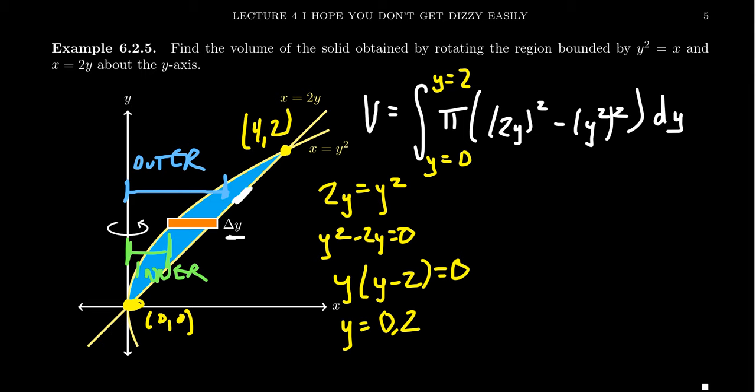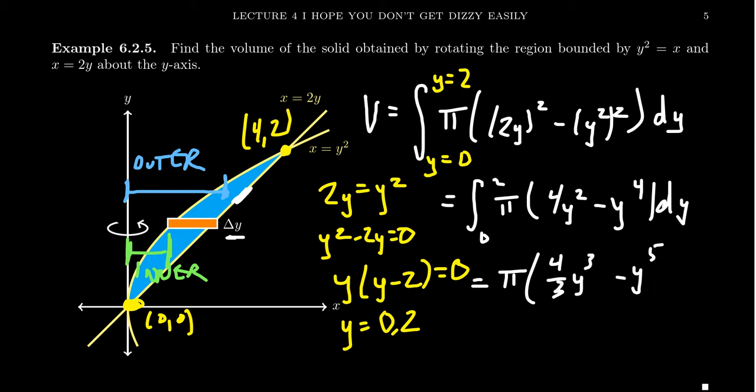So once you've set up the integral, and for these type of story problems, that's always the hardest part, setting up the integral correctly. Once you've set up the integral correctly, the calculation is going to be fairly routine. So we have to algebraically prepare this thing. 2y squared will become a 4y squared, and then y squared squared gives us a y to the fourth. This thing is now perfect for the power rule. So we're going to get pi times 4 thirds y cubed minus y to the fifth over 5, as we go from 0 to 2.